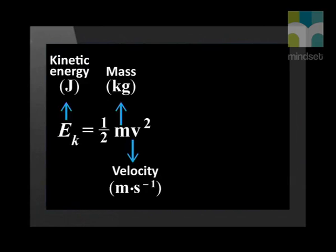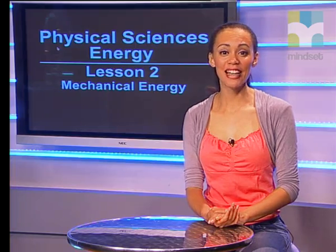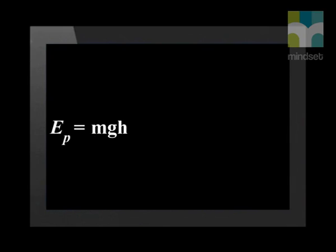Potential energy is energy due to an object's position in a gravitational, magnetic, or electric field. We will focus on gravitational potential energy — that is the energy because of the height of the object above the ground. We calculate the gravitational potential energy of an object with the formula E_P equals the product of M, G, and H.